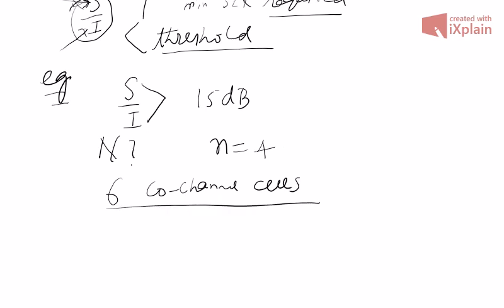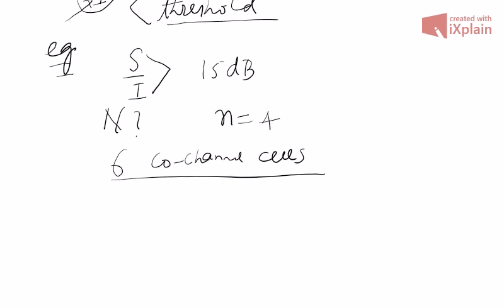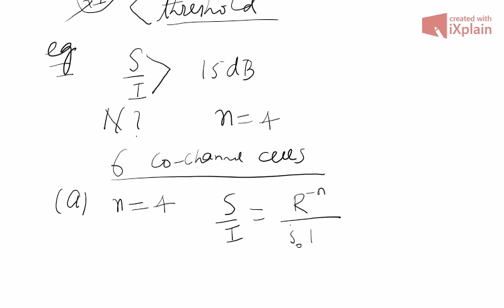All six co-channel cells are at the same distance. Using the path loss equation, S/I equals r to the power minus n divided by the summation. Since the distance is the same, this formula becomes simply i-naught times d to the power minus n, which simplifies to (d/r)^n times one over i-naught. The path loss exponent n here is 4.